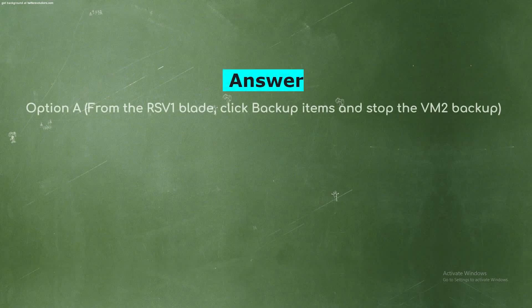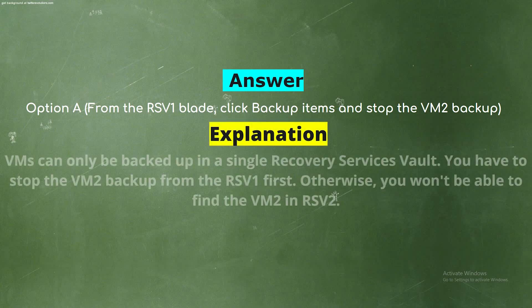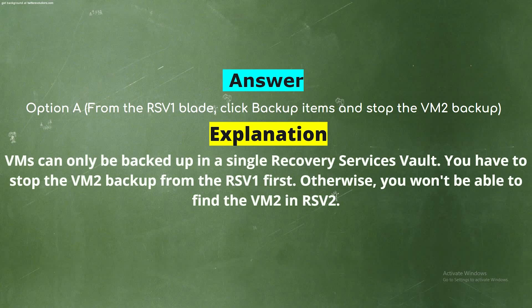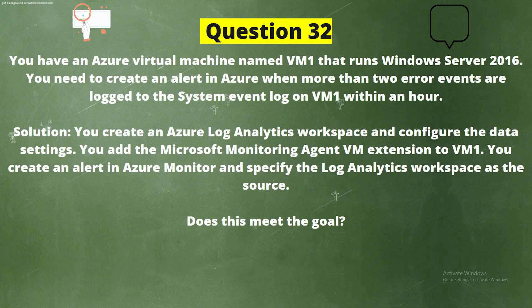The correct answer is Option A: From the RSV1 blade, click Backup Items and stop the VM2 backup. Explanation: VMs can only be backed up in a single Recovery Services Vault. You have to stop the VM2 backup from RSV1 first; otherwise you won't be able to find VM2 in RSV2.